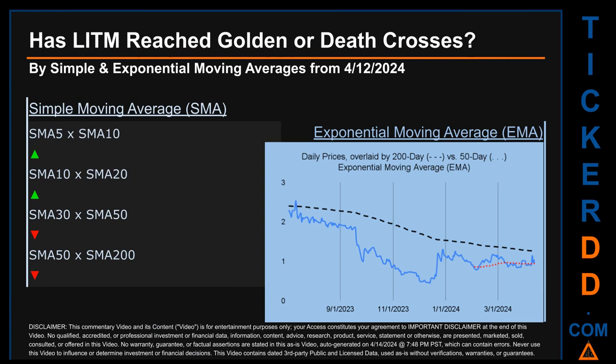Has LITM price reached golden or death crosses? Golden cross and death cross are basic signals that compare average prices across two specified trade-day ranges — a short-term versus a long-term range, for example five-day versus 10 trade days. A golden cross is a bullish signal appearing when a ticker's short-term moving average crosses above its long-term average. Vice versa, a death cross is a bearish signal when the short-term crosses below its long-term moving average. For our analysis, we looked at both simple moving average (SMA) and exponential moving average (EMA), the latter giving more weighting to recent prices.